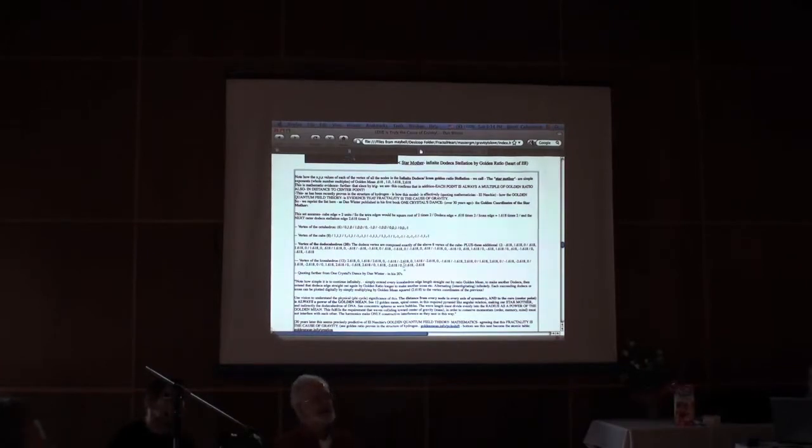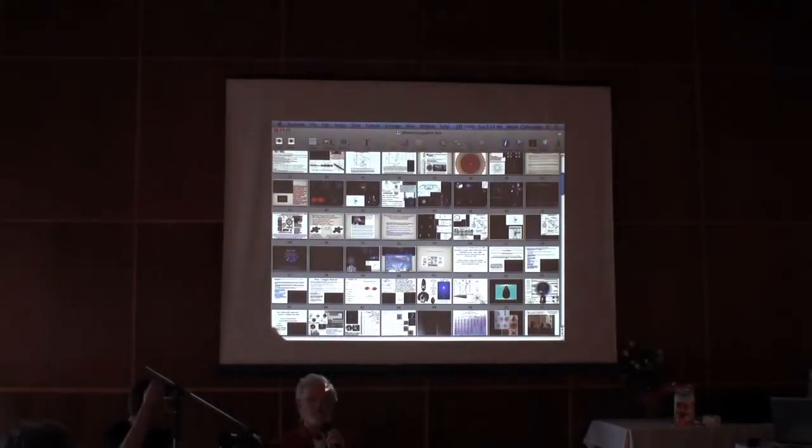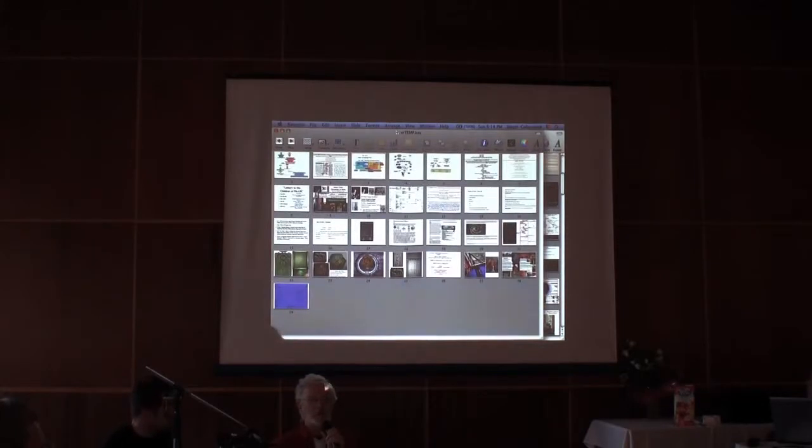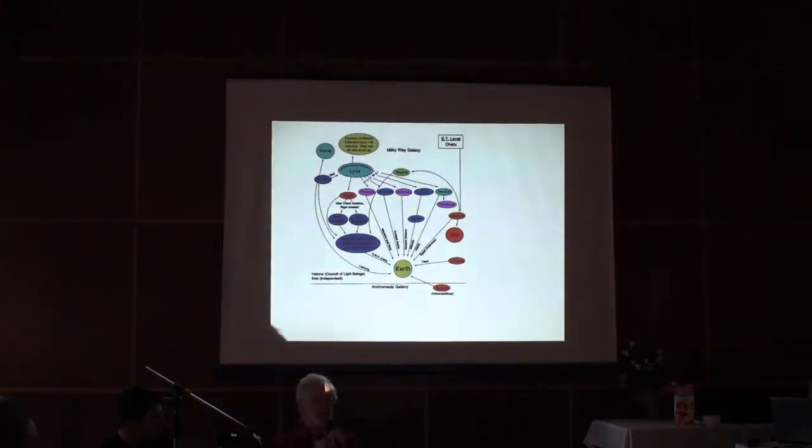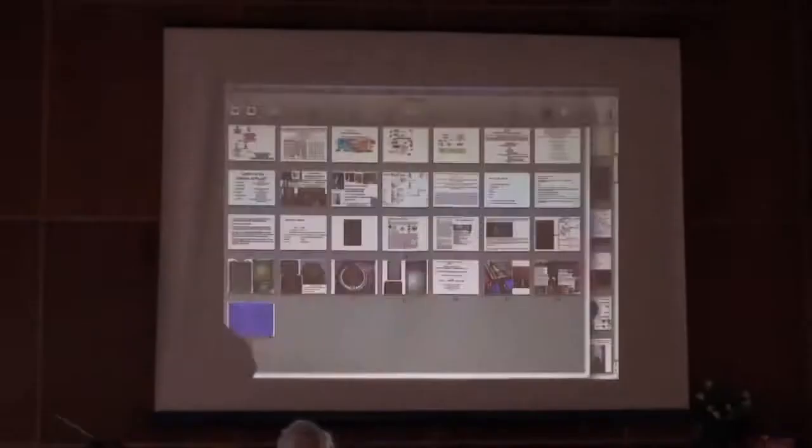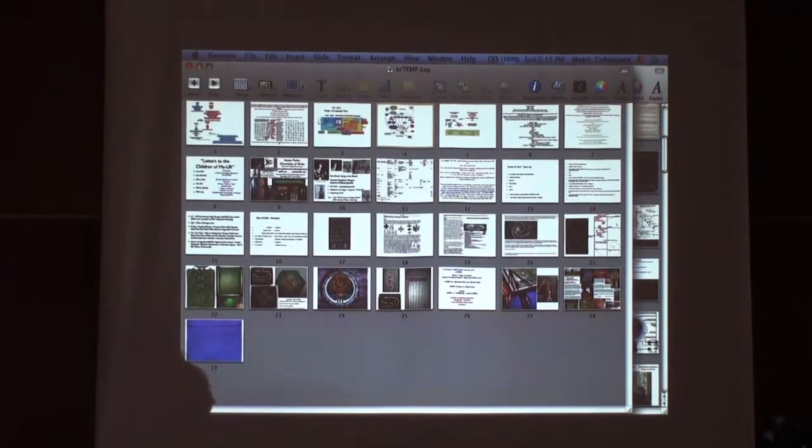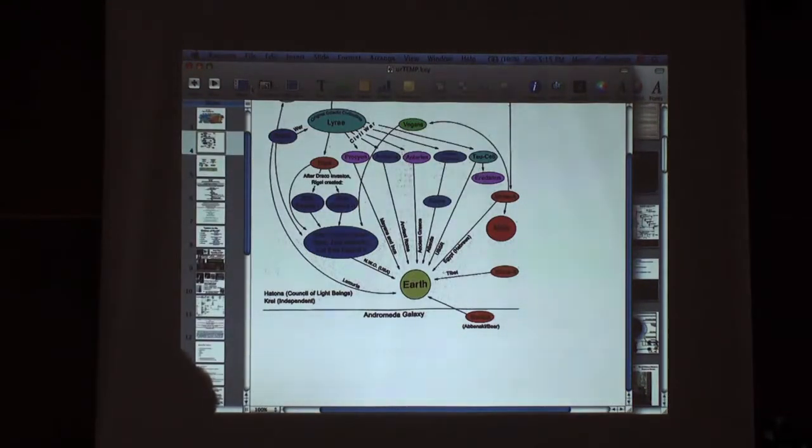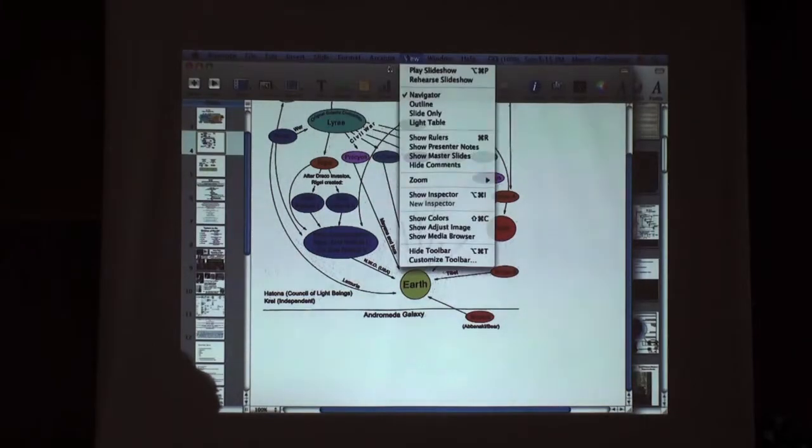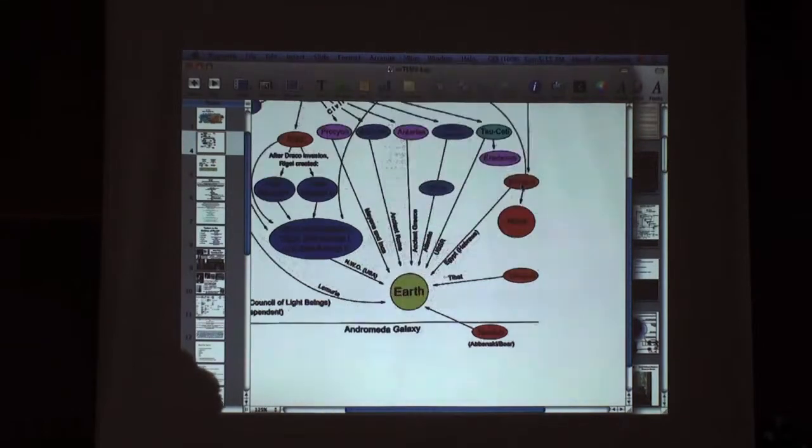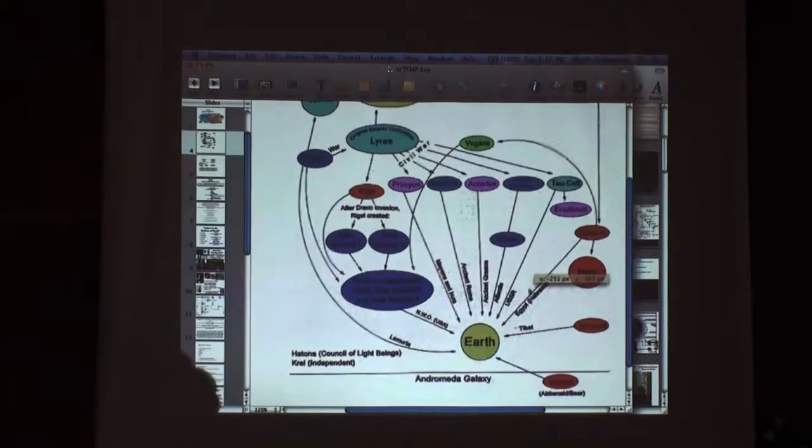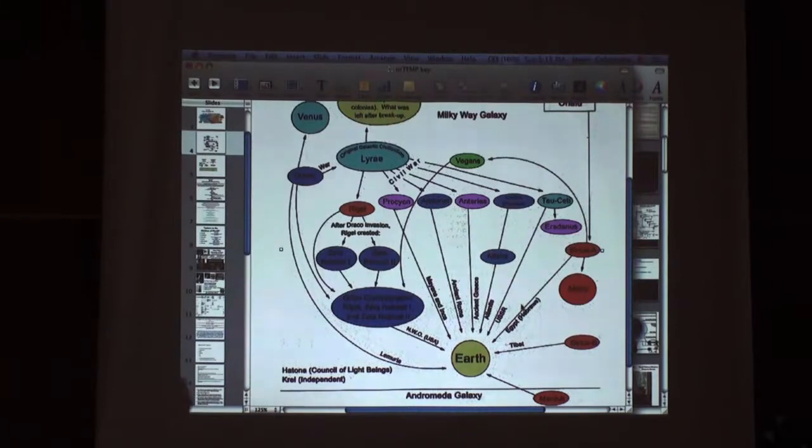Do you think that the whole human population is related to this dragon family on the equal level or very different levels of relationship? In the Montauk literature they describe 22 different extraterrestrial groups that were involved in cooking up our DNA. In the Montauk project, which is presented here, it talks about 22 extraterrestrial races that were involved in creating our DNA.